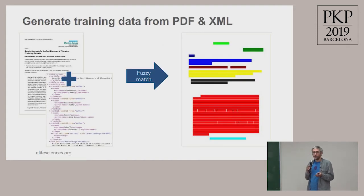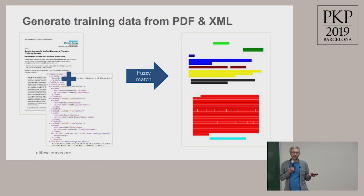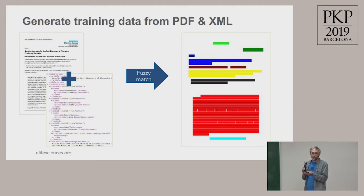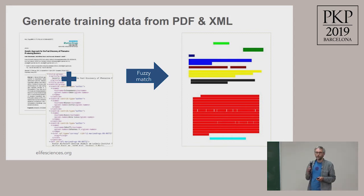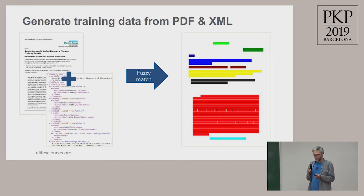To do that, we first need to generate the right training data. We already have PDF documents and we have the JatsXML. The JatsXML tells us what the title is, so we find the title in the XML and locate it in the PDF document. Then we can mark up the area where the title is and do that with all of the elements, so we have a labeled picture. Then we can train a machine learning algorithm on that, and on an unseen document it could predict what looks like the title.